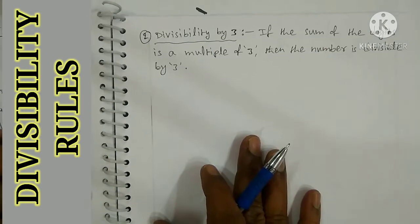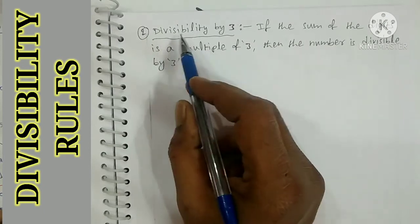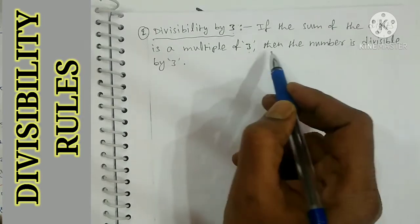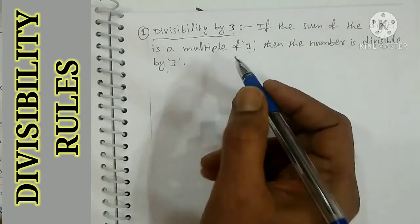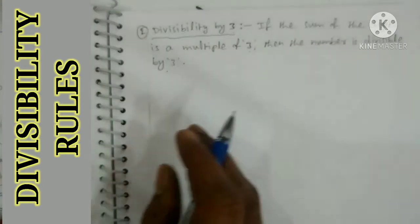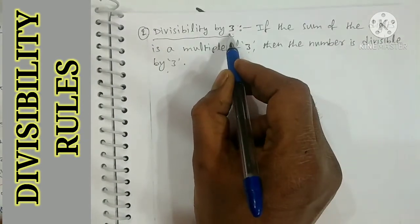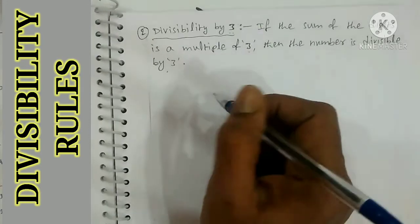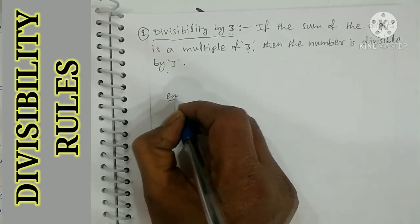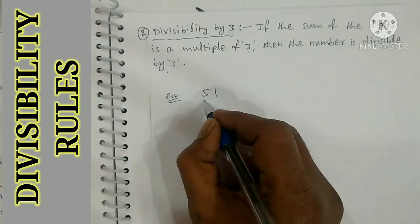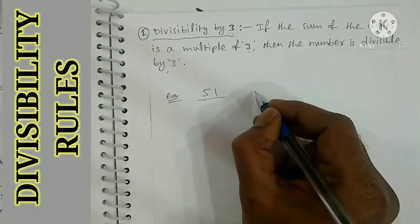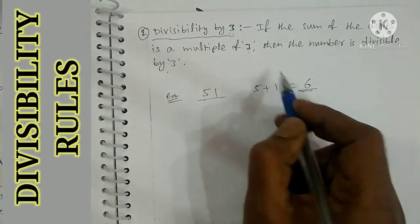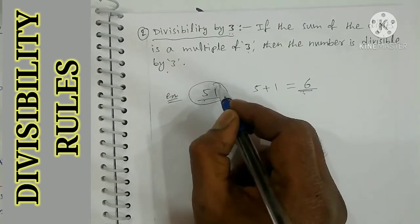Now the second divisibility rule: divisible by 3. If the sum of the digits is a multiple of 3, then the number is divisible by 3. For example, take the number 51. 51 is a 2-digit number. 5 plus 1 equals 6. 6 is a multiple of 3 - 3 times 2 is 6. So 51 is divisible by 3.